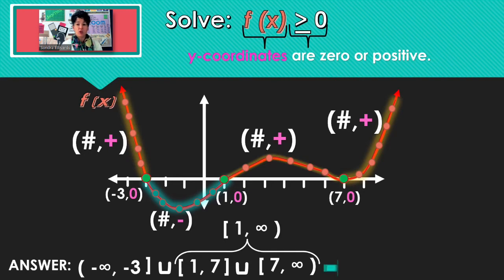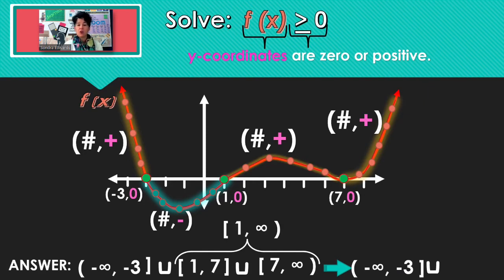So our final answer is going to be negative infinity up to negative 3, including that negative 3, union, 1 through infinity. And there's our final answer.